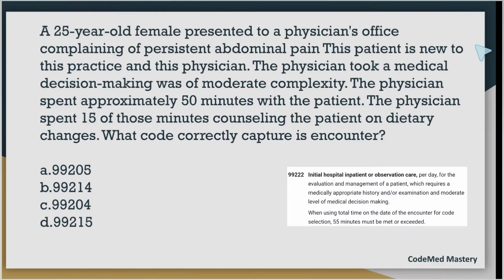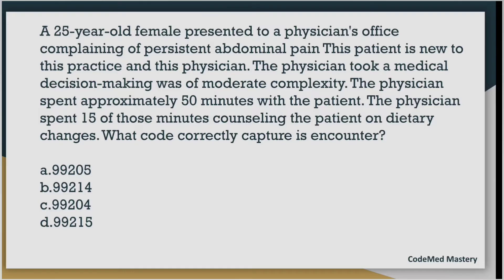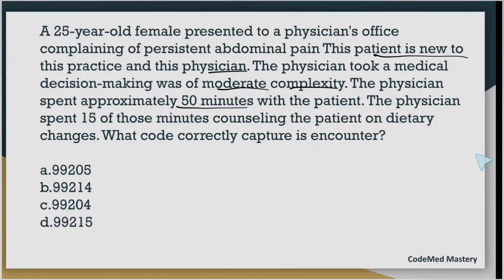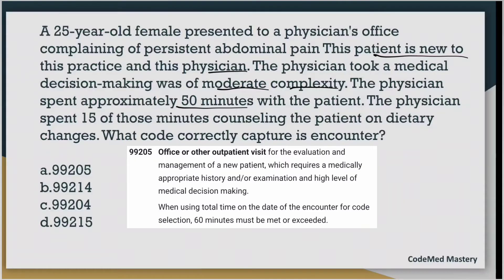Let's move on to solving more questions. A 25-year-old female presented to a physician office complaining of persistent abdominal pain. This patient is new to this practice and this physician. The physician took a medical decision making of moderate complexity and the time spent was 50 minutes, with 15 of those minutes counseling the patient on dietary changes. The patient is new, MDM is moderate, time is 50 minutes. Check option A: 99205 — that requires high-level MDM and 60 minutes, so we eliminate it.